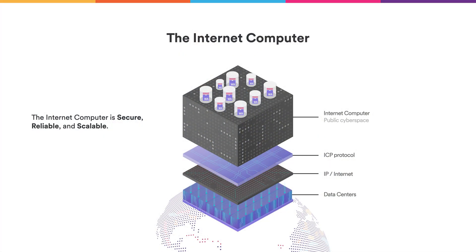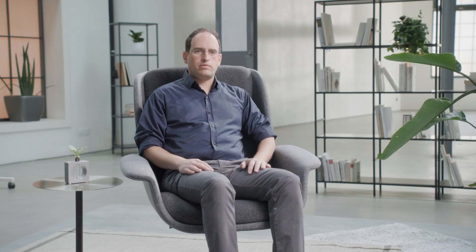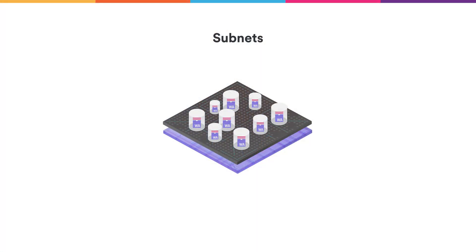The Internet Computer is designed to be secure, reliable and scalable. Scalability is provided by breaking it into subnets. Each subnet can be viewed as a smaller Internet Computer running some canisters and multiple nodes. The peer-to-peer layer enables scalable, reliable and secure communication between nodes of the same subnet.